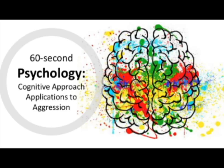Hostile aggression is described as hot-blooded or impulsive, and is often accompanied by physiological reactions like an increase in heart rate and blood pressure. On the other hand, instrumental aggression is often called cold-blooded as it is planned, intentional, and focused on achieving a particular goal. Therefore it is not usually accompanied by the same physiological reactions as hostile aggression.